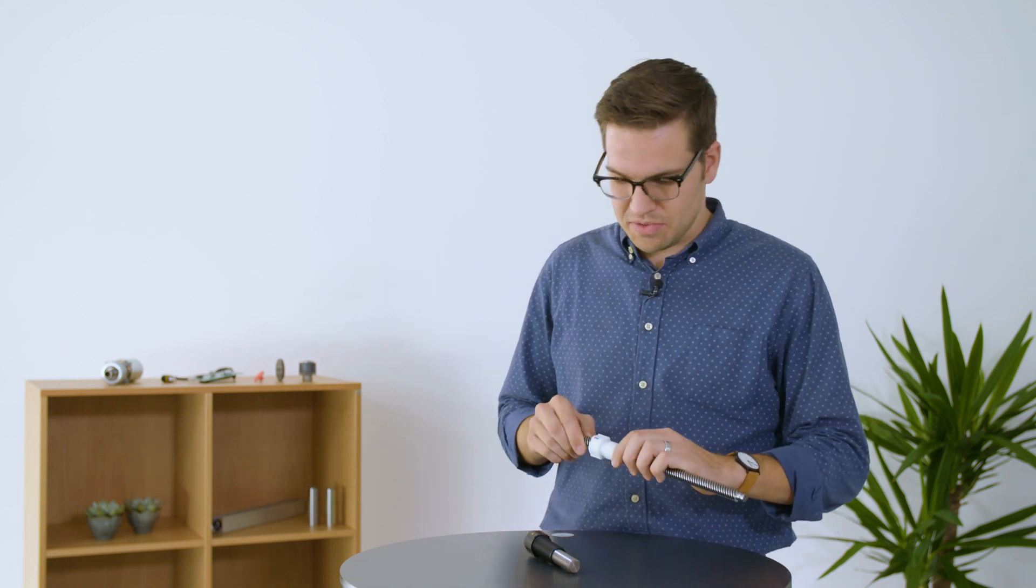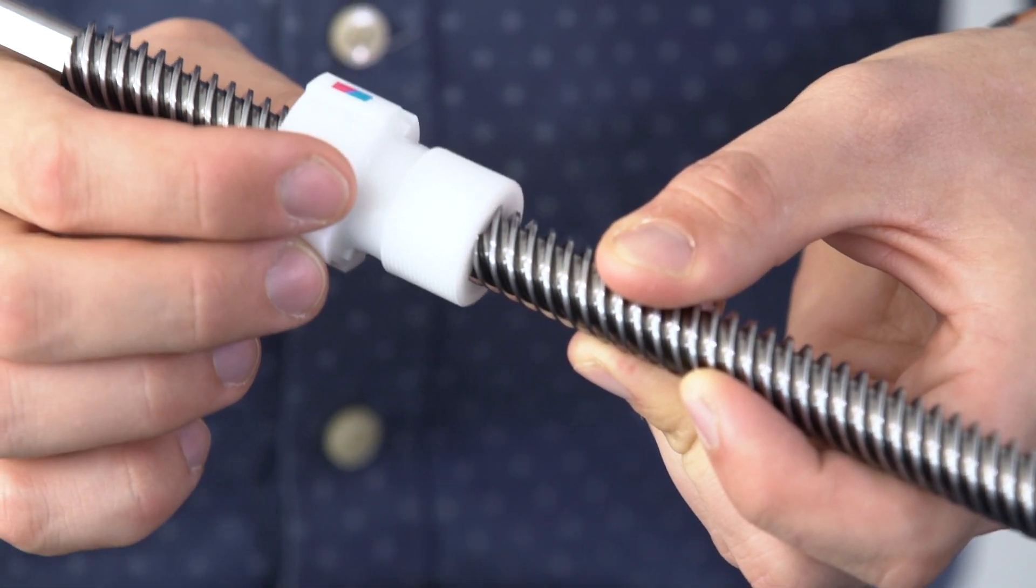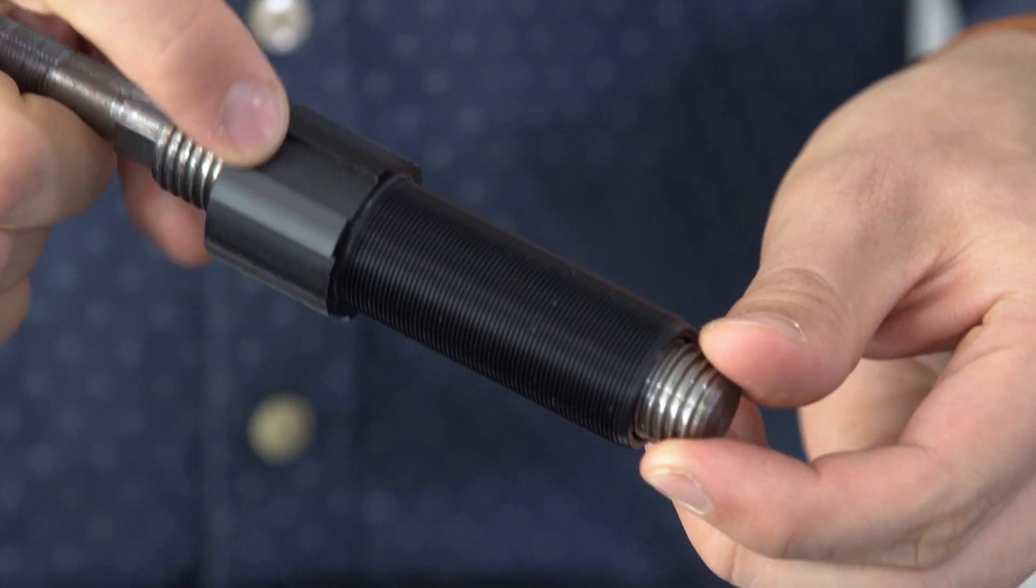So what is spindle pitch? Spindle pitch is the distance that a spindle nut moves along the spindle when it rotates 360 degrees around the spindle. For example, we have a 20 millimeter pitch and a 2.5 millimeter pitch. As we rotate 360 degrees, the spindle nut moves further on the 20 millimeter than on the 2.5 millimeter.